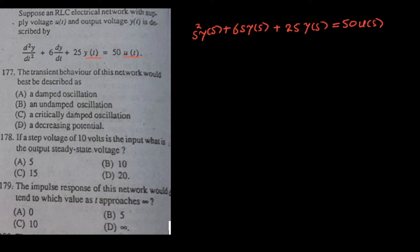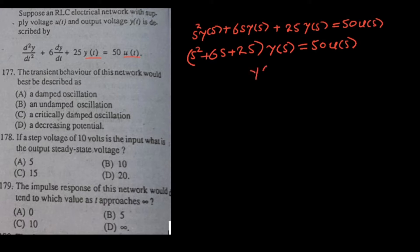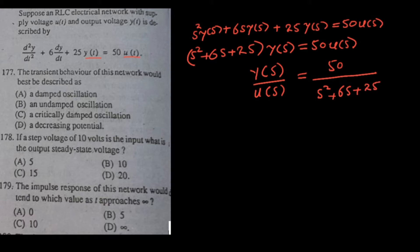Now let's take y(s) common from the left-hand side and rearrange this equation in the form of the transfer function, which is output divided by input. This can be written as 2×25 divided by s² + 6s + 25.